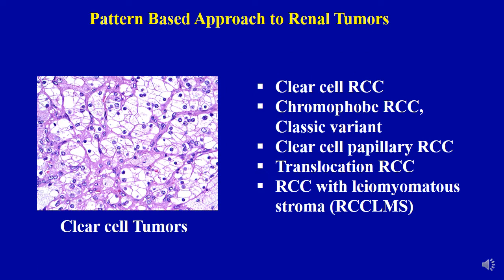Within tumors showing clear cell cytoplasm, the most common and most important entity to recognize is clear cell renal cell carcinoma. You can have chromophobe renal cell carcinoma classic variant, and a newer entity is clear cell papillary renal cell carcinoma. Another entity showing tremendous progress is translocation renal cell carcinoma, also termed MiT-family translocation RCC. A provisional emerging entity is renal cell carcinoma with leiomyomatous stroma — I have a separate video on this entity highlighting some of our work.